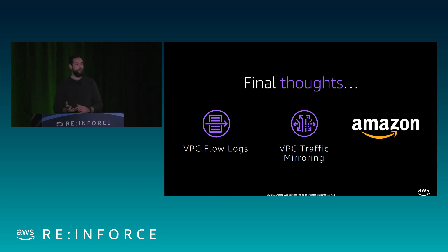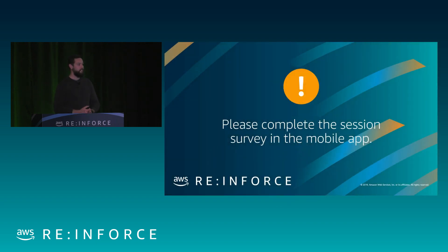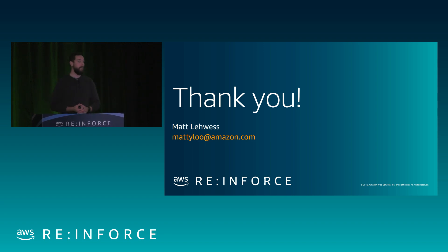Dave gave us real-world examples of how Amazon plans to use traffic mirroring. As a closing thought: human beings have five fingers, five toes, five senses, a starfish has five arms, and an earthworm has five hearts — so if you think we're worth it, don't forget to fill out your evaluation and we love fives. That's all for today. If you want the slides — there are 113 slides, a whole bunch of code — send me an email at the address on this slide. We'll be doing a similar session at the New York Summit in about a month as well.